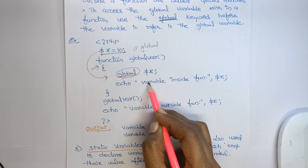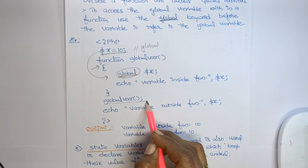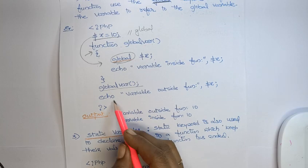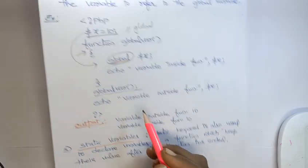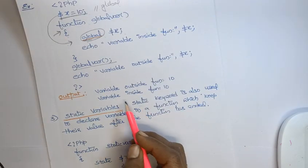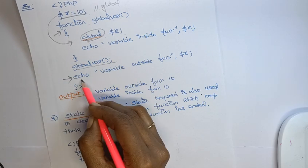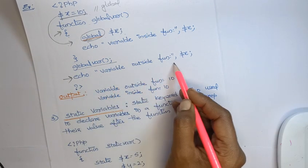And again calling this function global variable, and after that again I am printing the x value. So here first it will execute this one. So here, echo variable outside.